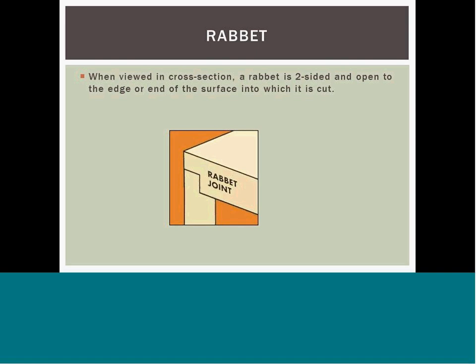A rabbet is an edge or groove cut into the edge of a piece of machinable material, usually wood. In cross-section, a rabbet is two-sided and open to the edge or end of the surface into which it is cut. A use of a rabbet is in a glazing bar, where it makes provision for the insertion of the pane of glass and putty. It might also accommodate the edge of the back panel of a cabinet, or be used to form a joint with another piece of wood containing a dado.